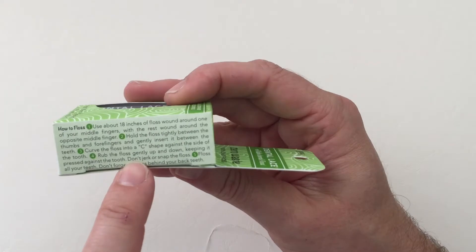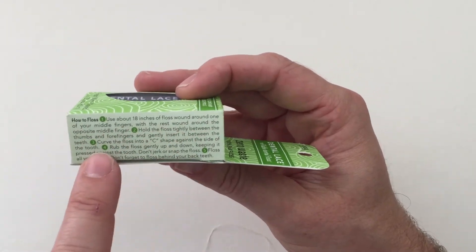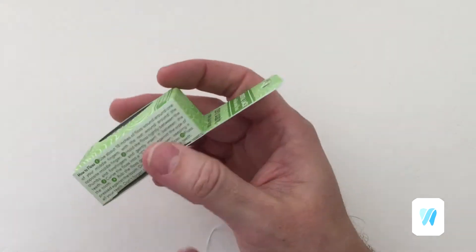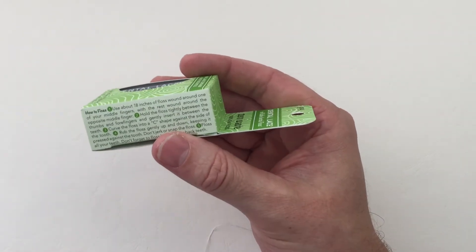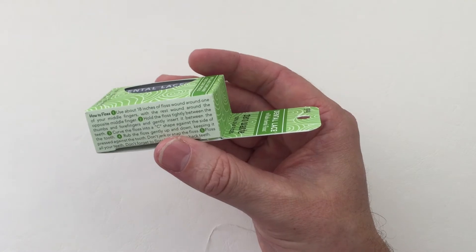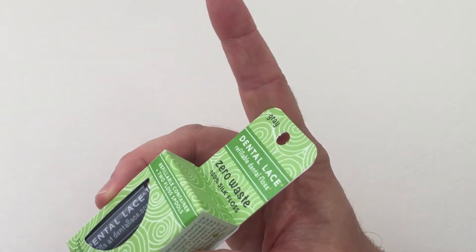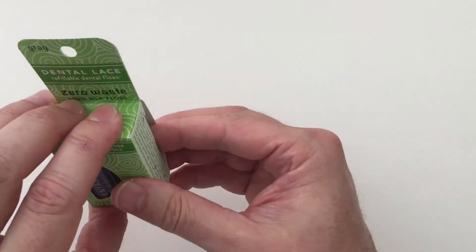It's got some very simple how-to-floss information there, and you're looking at getting between 30 to 45 centimeters of floss per use. That should last you a little while, and you use your middle fingers for that. Let's get in there and have a look.